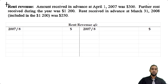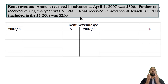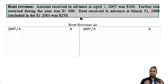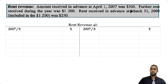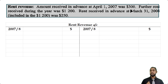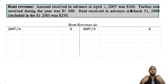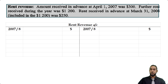Those are the expense accounts. Let's take a look at the revenue accounts. The first one is rent revenue. Amount received in advance at April 1st 2007 was $300. An amount received in advance is a prepayment — prepaid revenue is classified as a liability because people have paid us before we've delivered the good or service. We now have an obligation to provide that good or service or issue a refund, and that obligation makes it a liability. So the balance is brought down on the credit side.